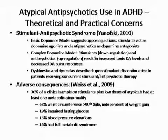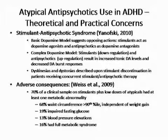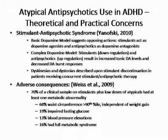Another important thing to keep in mind is what are we really doing when we administer these two types of medications? At the most simple basic dopamine level, we're putting an agonist and an antagonist together — why are we doing this? In the more complex dopamine models you can make more sense of it. But there's also the practical issue of dyskinesia and dystonia, which are described when you co-administer stimulants and atypicals and then stop one or the other.